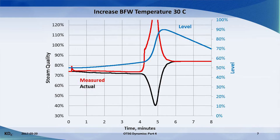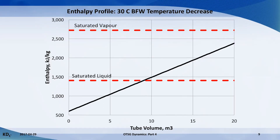The level in the steam separator is the best indicator of what is actually happening in the OTSG. The level jumps up when the extra water is kicked out, and then slowly draws back down because the OTSG then delivers less water to the separator. The next change is a sudden 30 degree drop in boiler feed water temperature. The water holdup starts at 9 cubic metres.